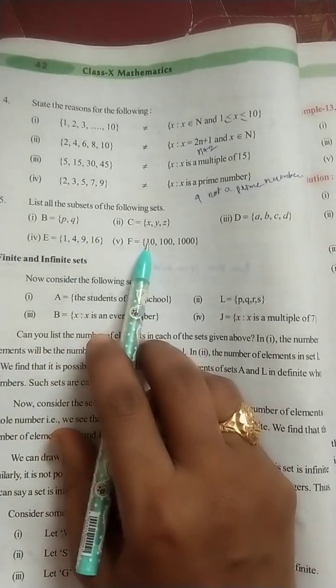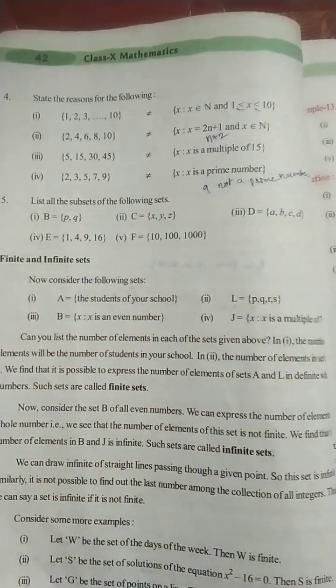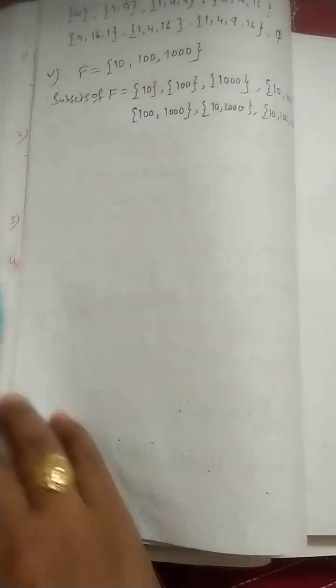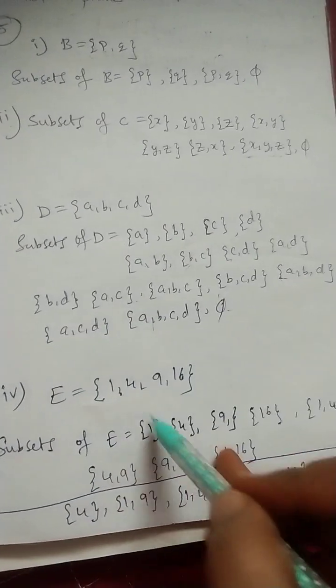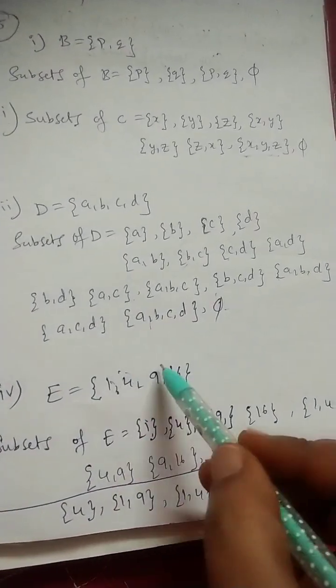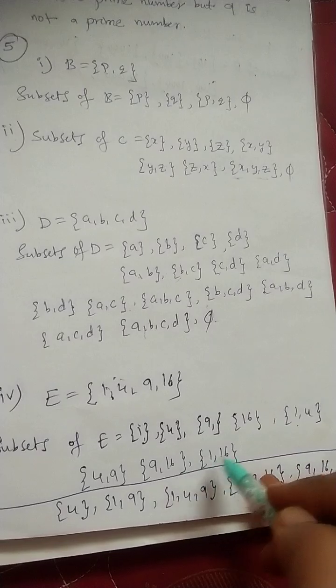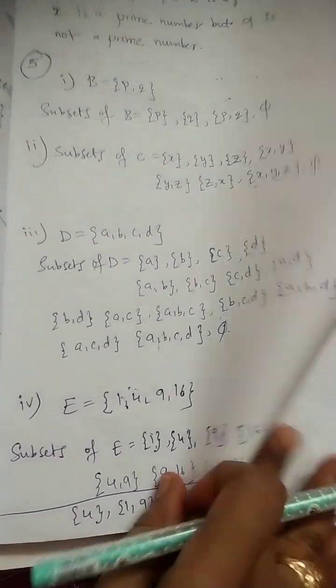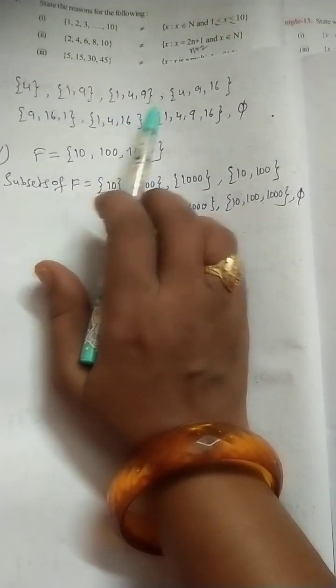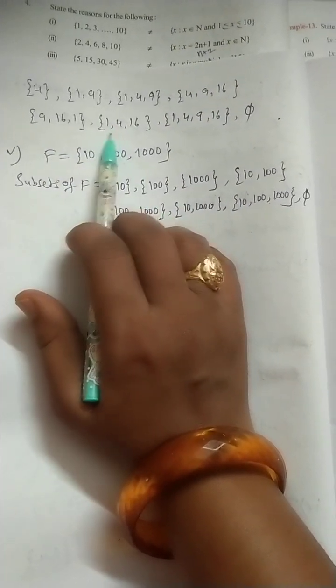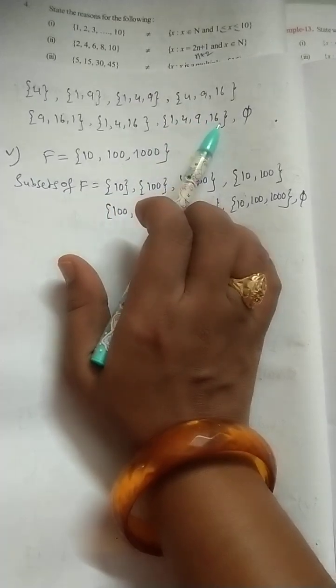For this we can write the subsets as individual elements. First, set A: {1}, {4}, {9}, {16}, then pairs — {1,4}, {1,9}, {9,16}, {1,16}, {4,9}, {4,16}, {9,16} — then triples: {1,4,9}, {1,4,16}, {4,9,16}, and finally the full set {1,4,9,16}.